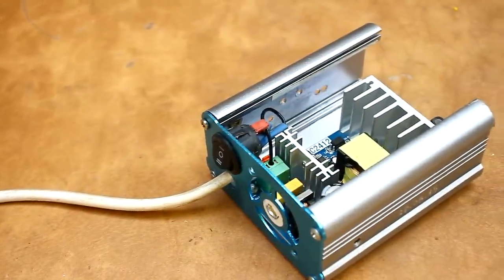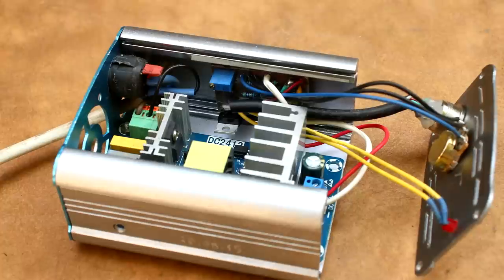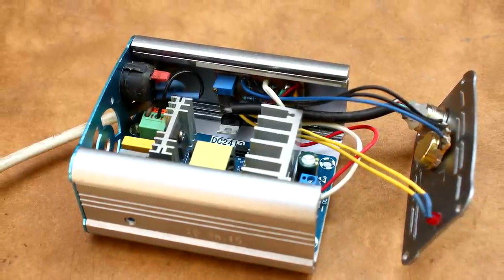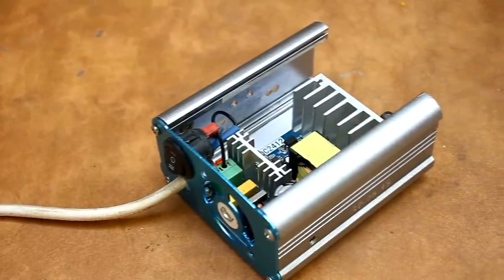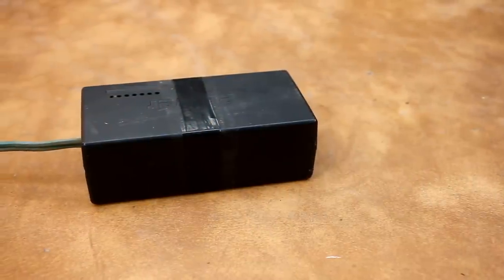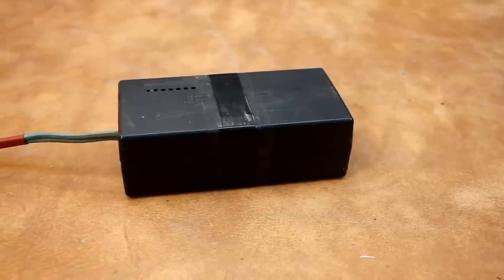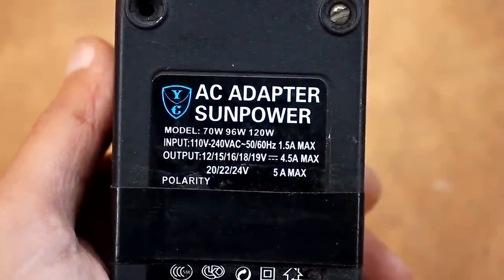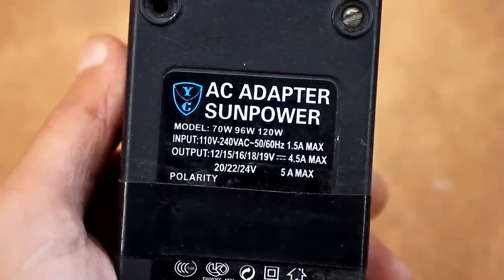It would be possible to install the regulator in the case from the previous station, because it includes the right power supply unit, but alas there simply isn't enough space. The power source must be stabilized. It is advisable to use a pulse one with an output voltage of 18 to 24 volts and with a current of 3 to 5 amperes.